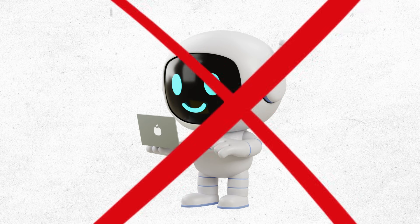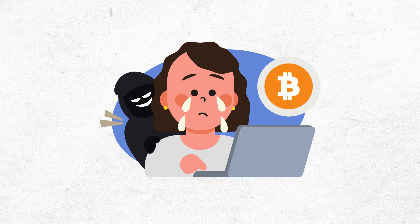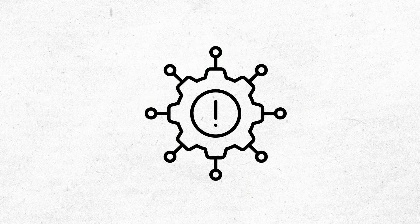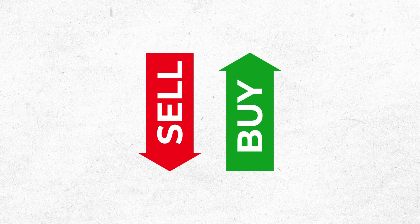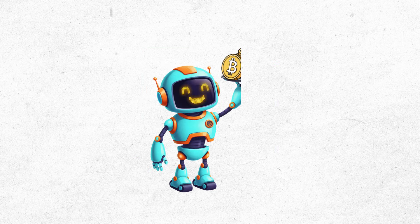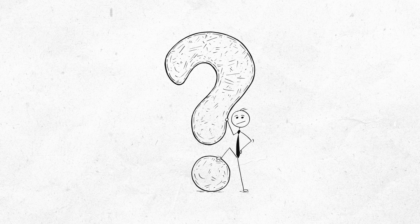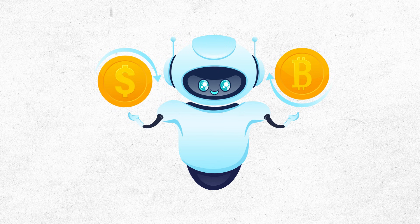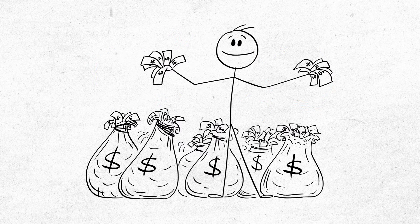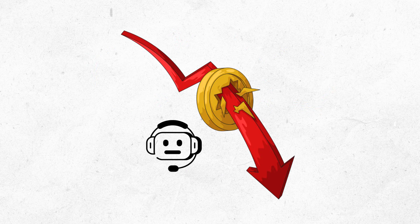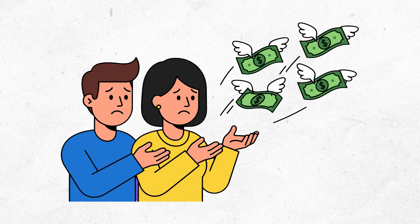Reality. People lost money. The bots didn't work. Some were scams that stole your crypto. Others were incompetent, buying high and selling low. If AI can beat crypto markets consistently, why sell it for 99 bucks a month? They wouldn't. They'd use it themselves and become billionaires. When crypto crashed, all these smart bots predicted nothing. People lost their savings.